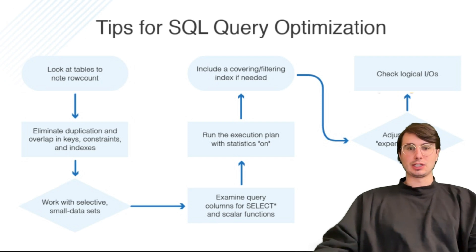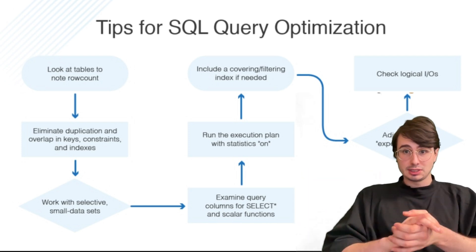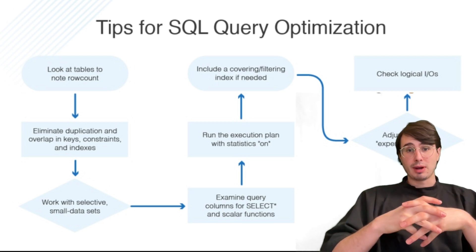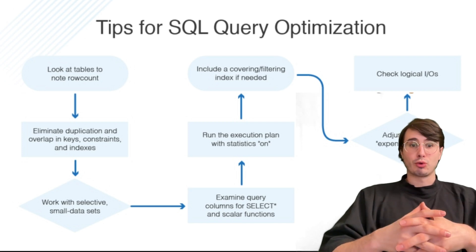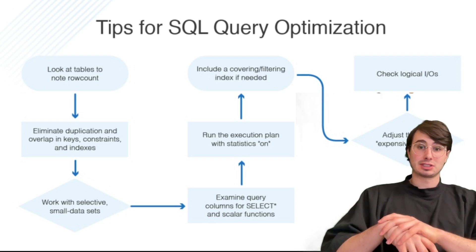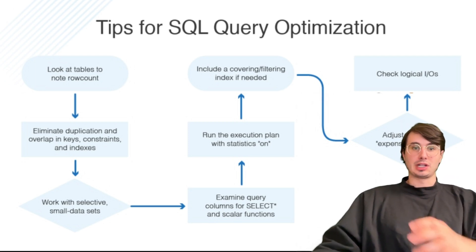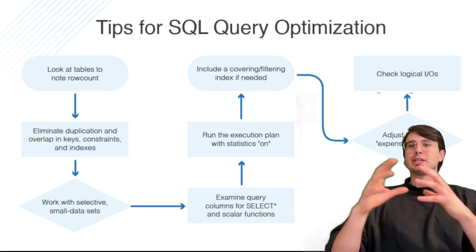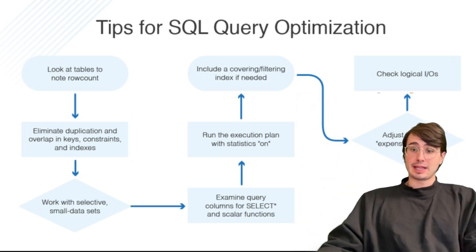A good response would be: I'd start by examining the query execution plan to identify bottlenecks. Then I would add appropriate indexes to filter columns or frequently joined columns, which is often effective at optimizing queries. I would also look at rewriting correlated subqueries as joins or using window functions. For example, if a query performed a full table scan, I might create an index on the filter column to significantly improve performance.